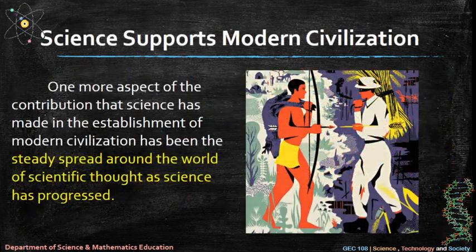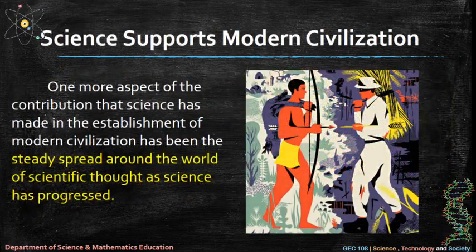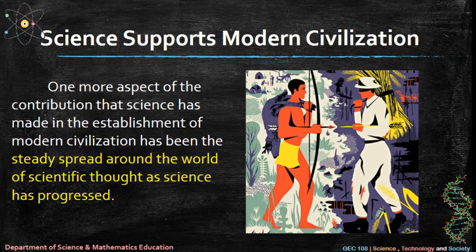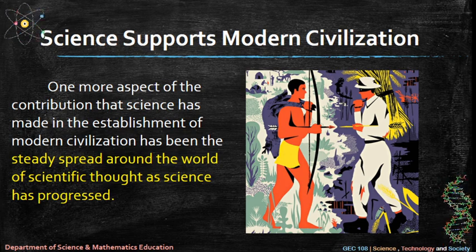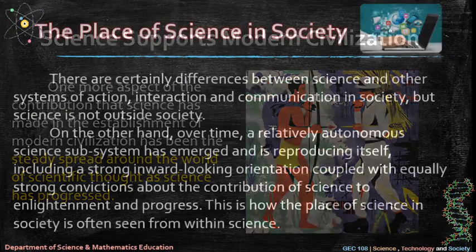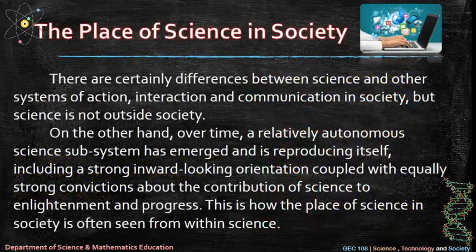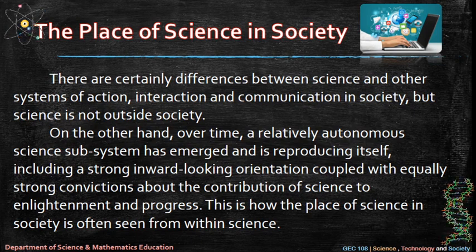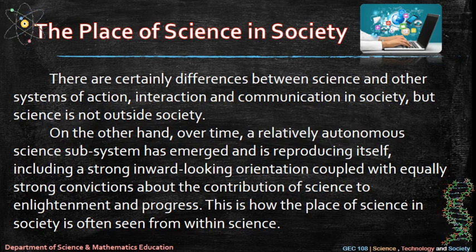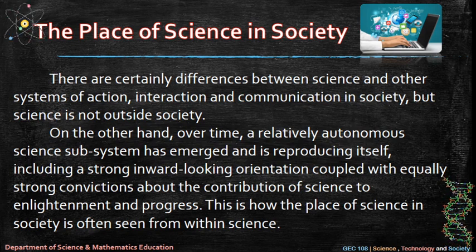Science supports modern civilization. One more aspect of the contribution that science has made in the establishment of modern civilization has been the steady spread around the world of scientific thought. As science has progressed, the place of science in society shows there are certainly differences between science and other systems of action, interaction, and communication in society — but science is not outside society.